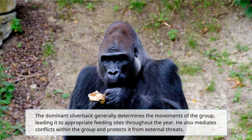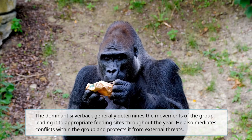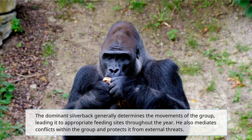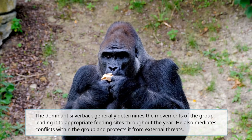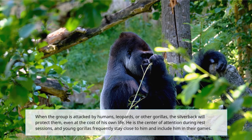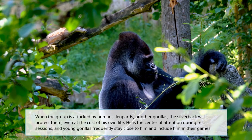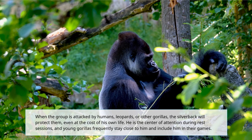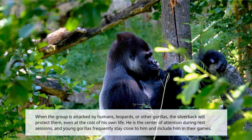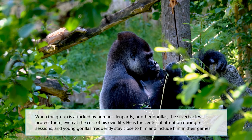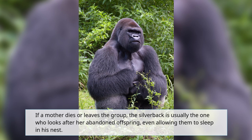The dominant silverback generally determines the movements of the group, leading it to appropriate feeding sites throughout the year. He also mediates conflicts within the group and protects it from external threats. When the group is attacked by humans, leopards, or other gorillas, the silverback will protect them, even at the cost of his own life. He is the center of attention during rest sessions, and young gorillas frequently stay close to him and include him in their games. If a mother dies or leaves the group, the silverback is usually the one who looks after her abandoned offspring, even allowing them to sleep in his nest.